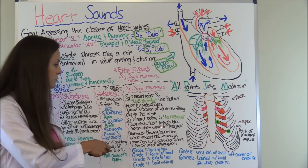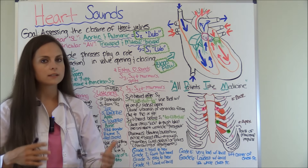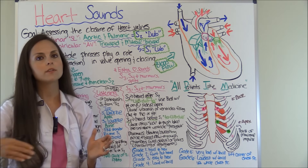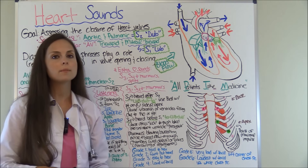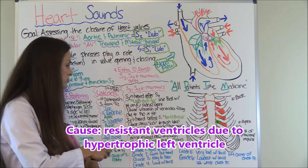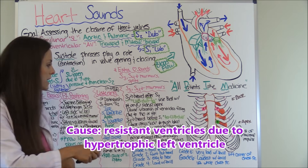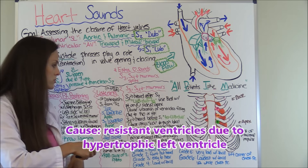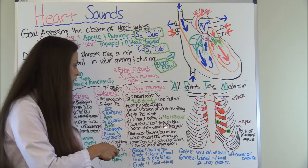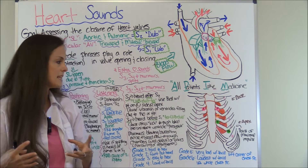S4 is heard before S1, so it sounds like tuh-lub-dub — the extra sound comes before the lub-dub, which is the opposite of S3. This is usually caused by the atrial kick during pre-systole, where the atrium is trying to push blood down into resistant ventricles. The ventricles are resistant, so the atria give them one more kick, and that's what you're hearing.